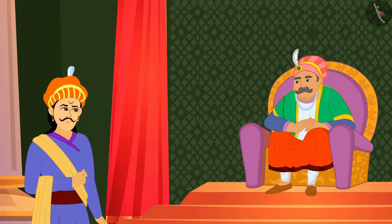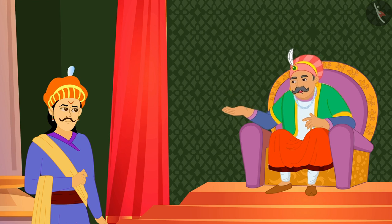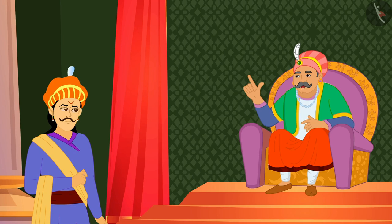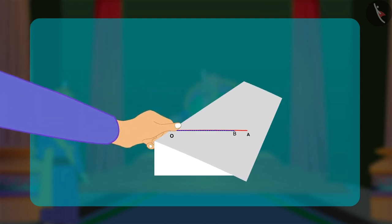Akbar asked Birbal, Why must the crease pass through the vertex of the angle? How could you say that this angle is bisected? Birbal explained, Suppose I fold over any point O of one portion of this sheet of paper and then crease the paper in such a way that the legs OA and OB of the given angle AOB coincide.